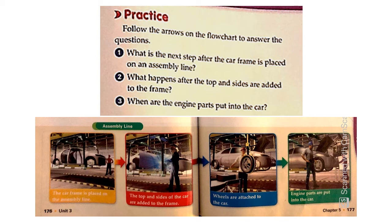Then you can see in the blue square that wheels are attached to the car. Question number two is what happens after the top and sides are added to the frame? And the answer is going to be wheels are attached to this car now. So once the top and sides are in place, now it's time to attach the wheels.